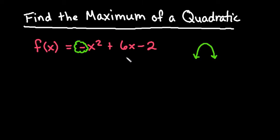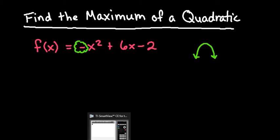So what we're going to do is we are going to take this equation, the negative x squared plus 6x minus 2, and plug it into our calculator.